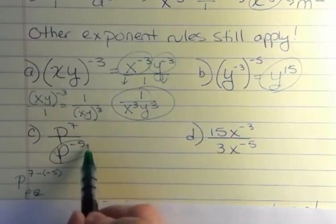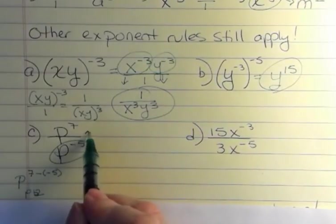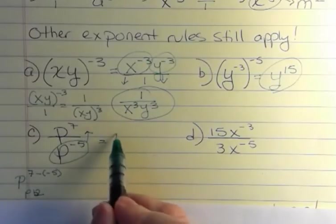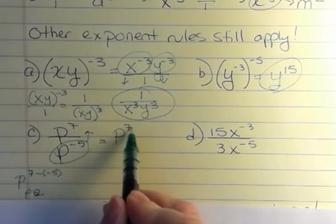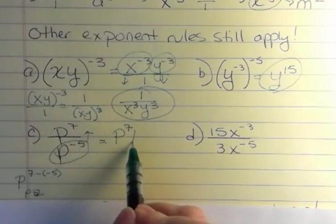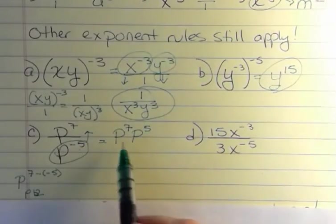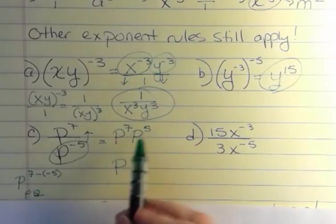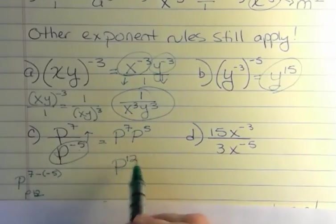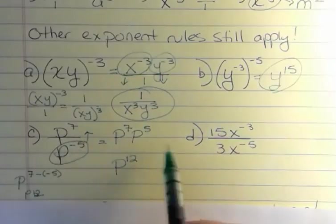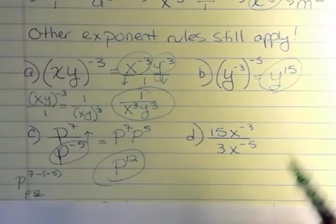But the other way to think about this is because this is negative, it's going to go up. Now p to the seventh is positive, it's not going anywhere. But p to the negative 5 comes up and now it's up there on the same level with p to the seventh. And now we can see another way to get p to the 12th. One way was to subtract these two. The other way is to move that negative exponent and then simplify, which is what I like to do.